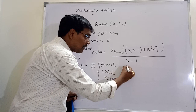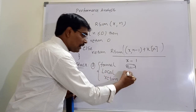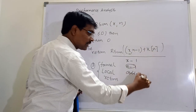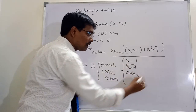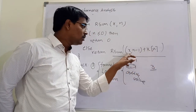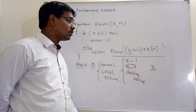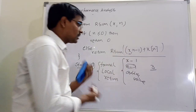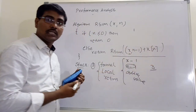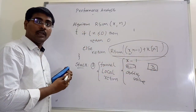For each call to r_sum, x requires one unit of memory, the value of n requires one unit of memory, and the return address requires one unit. So each call requires three units of memory. For example, if n = 5: the base address of x has one unit, n = 5, then n = 4, and so on — for each recursive call, three units of memory are needed.